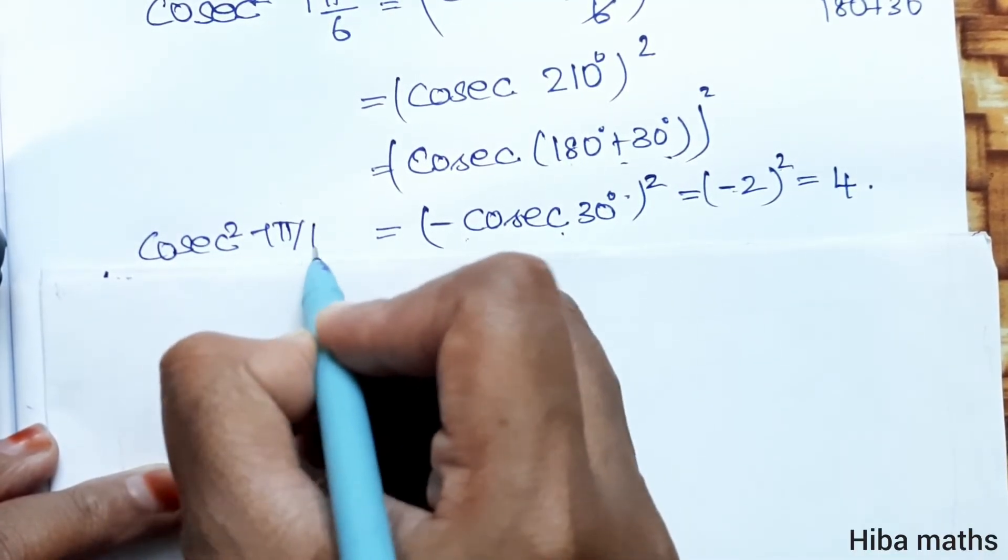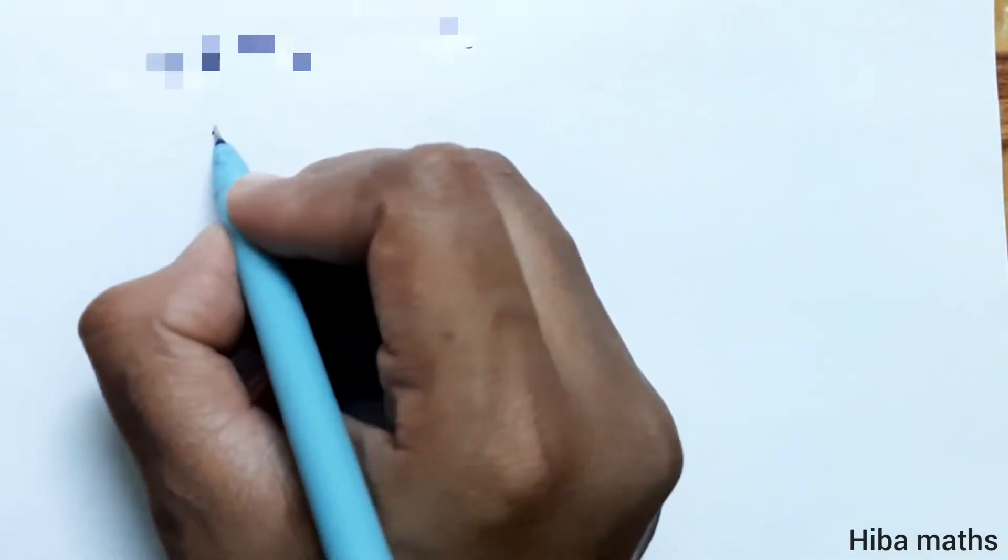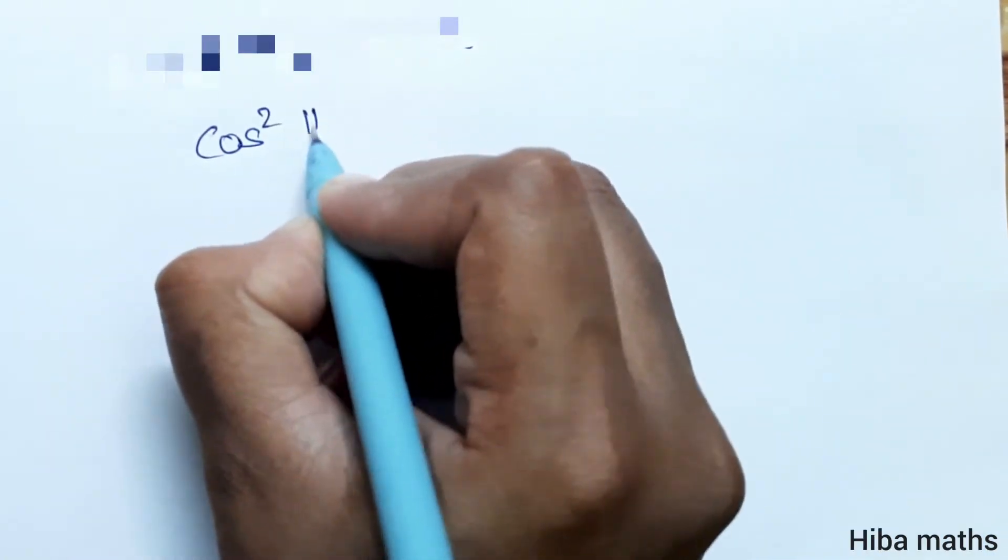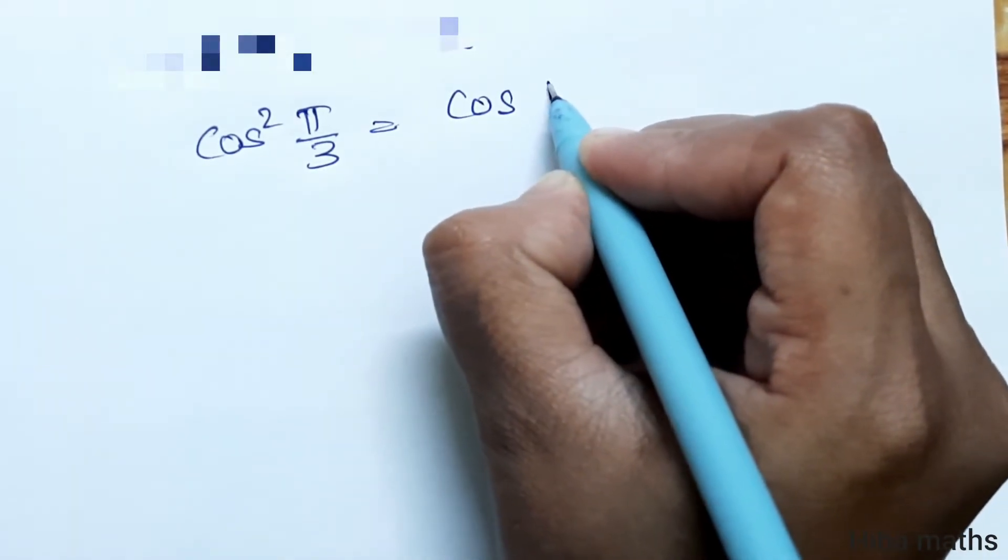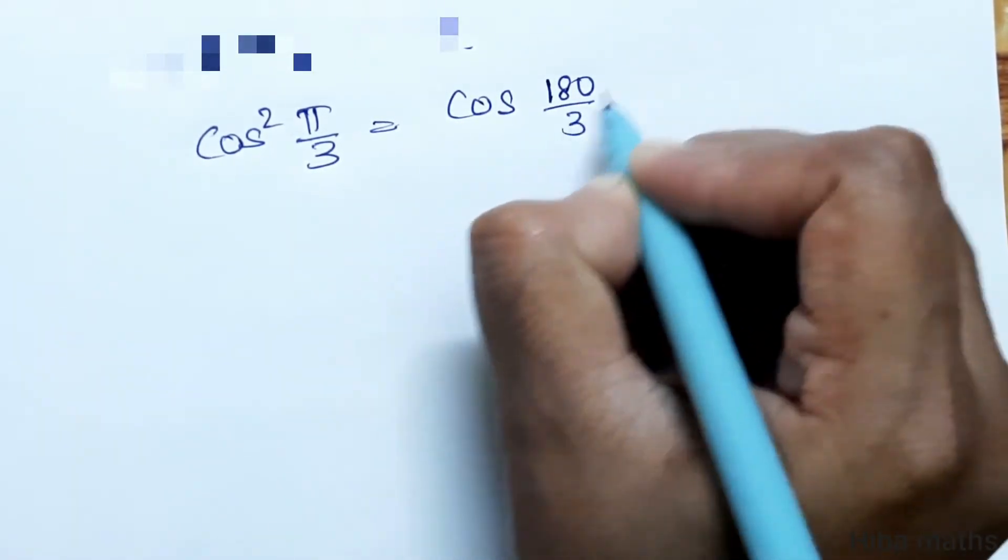So cosec²(7π/6) = 4. Now the last term is cos²(π/3). Cos π/3 means 180/3.